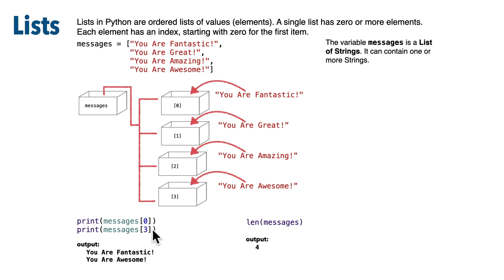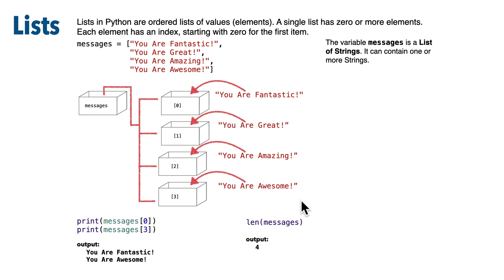Here I've got a list named messages. It has four elements. This list is composed entirely of strings separated by commas, and if you look at the message at index zero, that is 'you are fantastic' — the first element in the list. The message at index three is the fourth element in the list — that's the last element, and that is 'you are awesome.' You can also use the len function on lists, which gives you the length, or the number of elements in the list.